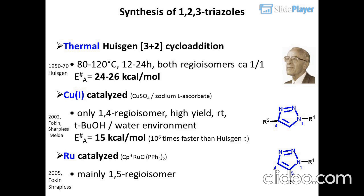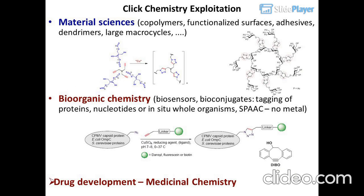The Cu-catalyzed reaction is 10⁶ times faster than the Huisgen reaction. Ru-catalyzed: CpRuCl(PPh₃)₂ gives mainly 1,5-regioisomers. Historical milestones: Huisgen 1950–70, Folkin and Sharpless 2002, Meldal 2005, Folkin and Sharpless Click Chemistry Exploitation.